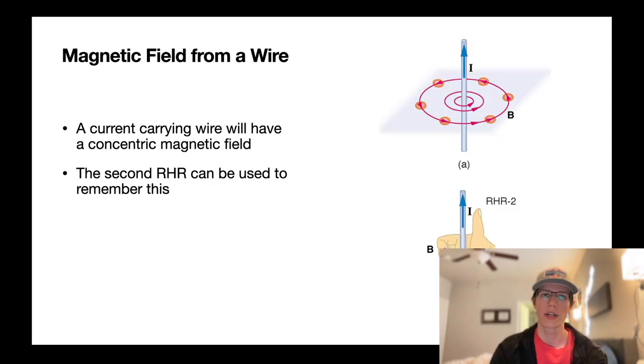And then in a current-carrying wire, you can also use another right-hand rule where your thumb points in the direction of the current. Your fingers can wrap around and tell you the direction of the magnetic field as it is concentric circles around the wire.